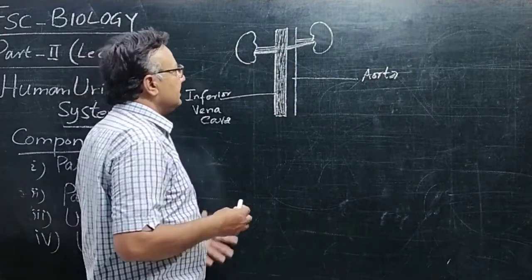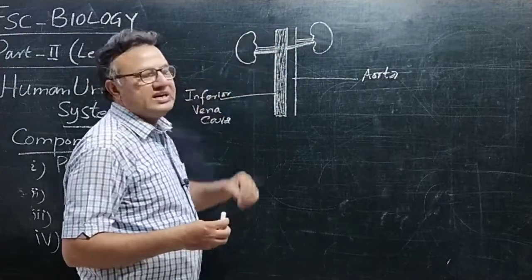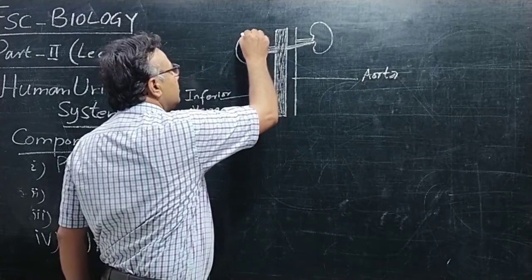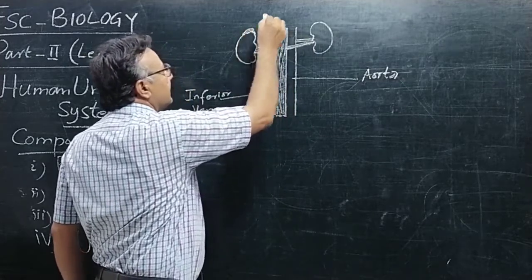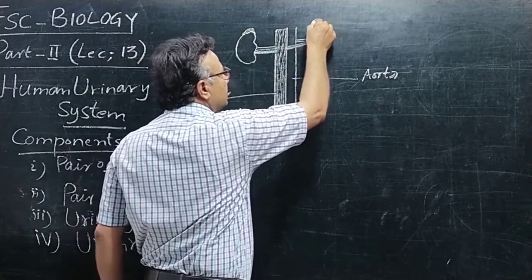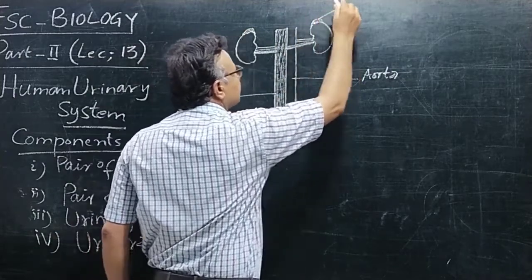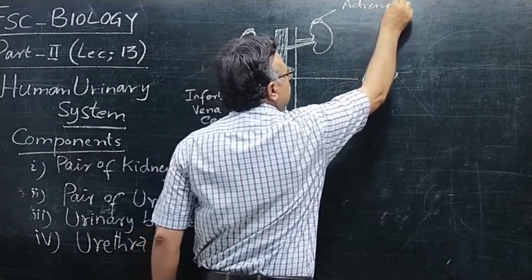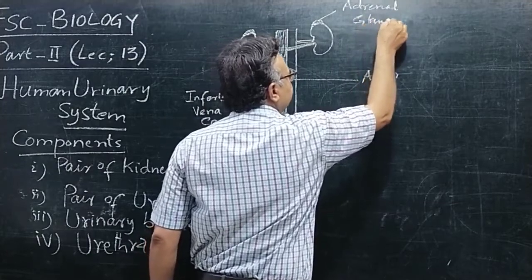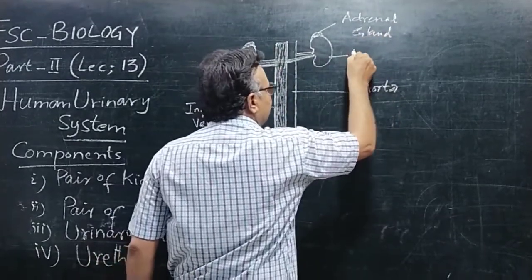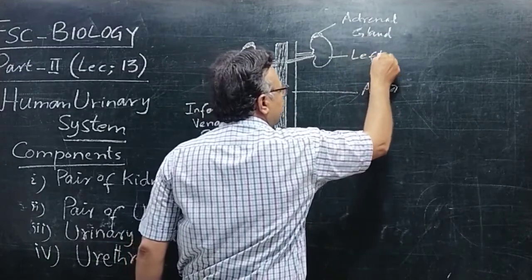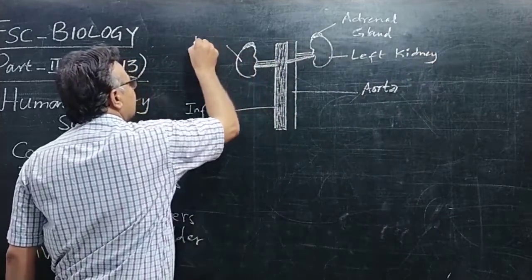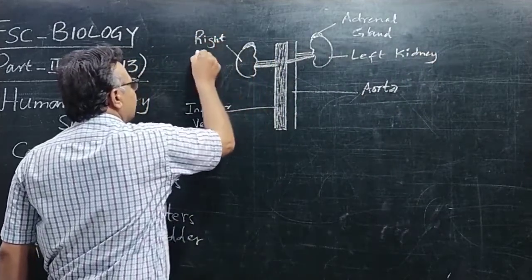اب یہاں پہ pair of kidneys کے اوپر glands بھی موجود ہیں۔ ان کا top والا حصہ — یہاں پہ ایک ایک gland موجود ہے، pair of glands موجود ہیں۔ یہ adrenal gland ہے۔ یہ left kidney ہے اور یہ right kidney ہے۔